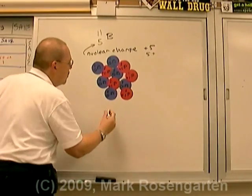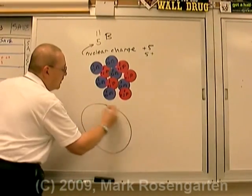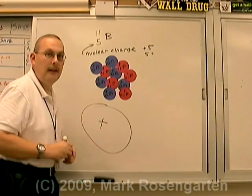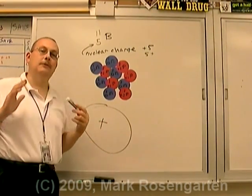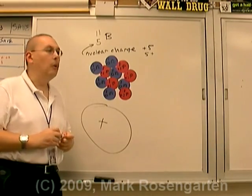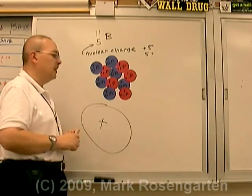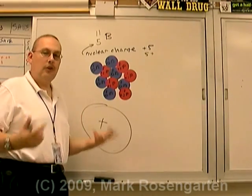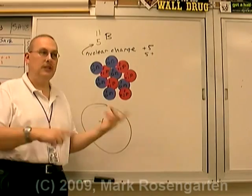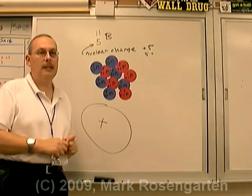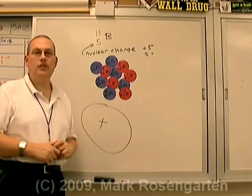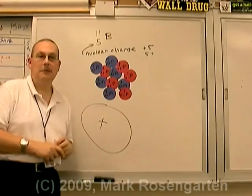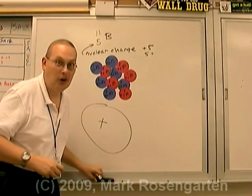So the nuclear charge is basically the number of protons with a plus sign in front of it to represent the fact that the protons have a positive charge, and therefore the entire nucleus is positively charged. This is going to come in very handy later when we talk about things like atomic radius and electronegativity, but it will make a lot more sense knowing that the nucleus has a positive charge.